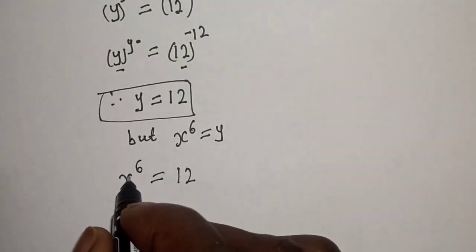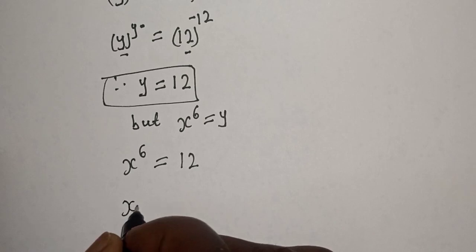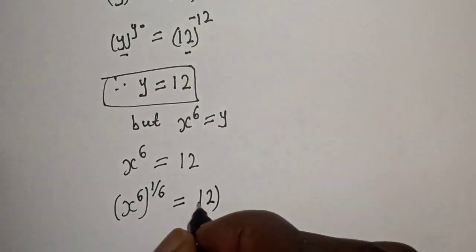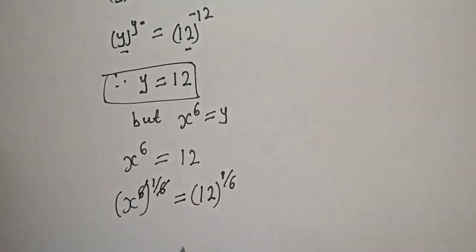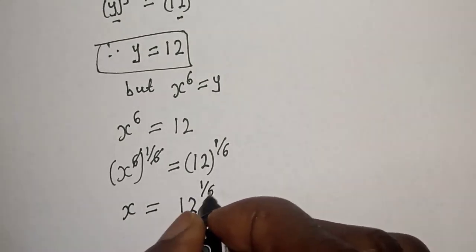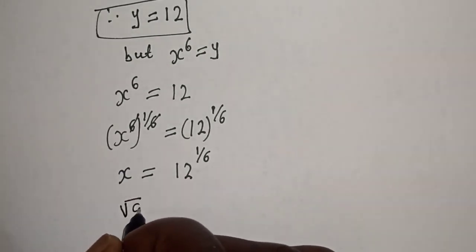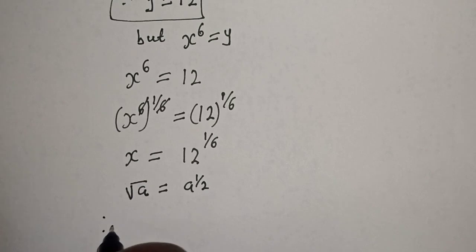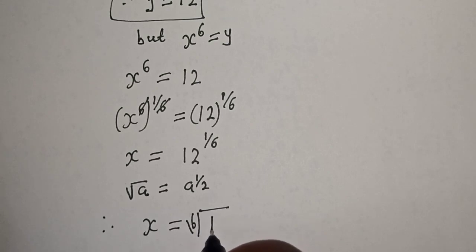Let's multiply the exponent of both sides by 1 over 6 in order to eradicate the 6. s raised to power 6, to the power of 1 over 6, is equal to 12 to the power of 1 over 6. The 6 will cancel the 6. s is equal to 12 raised to power 1 over 6. Take note that the 6th root of a is a raised to 1 over 6. Therefore s is equal to the 6th root of 12. This is the final answer.